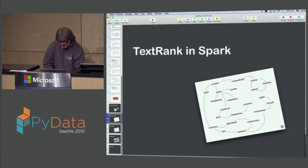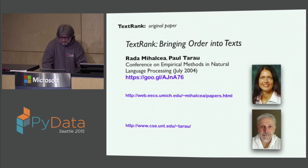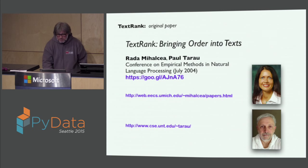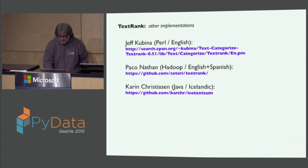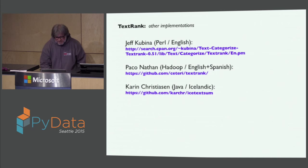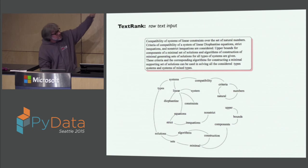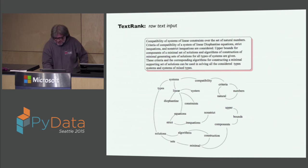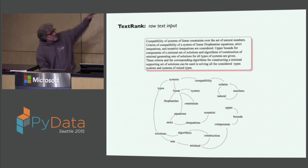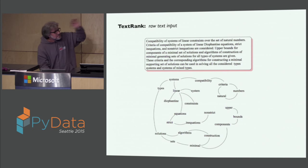This algorithm TextRank was done by Rada Mihalcea and Paul Tarau at UNT — Rada is at Michigan now. There are implementations in English, Spanish, and Icelandic if you need that. Here's like a really heavy, dense math paragraph out of a paper talking about linear Diophantine equations — but you see it creates a graph and then it doesn't really care what's in there. Light parsing, a little bit of semantic markup, and then you just run PageRank on it.